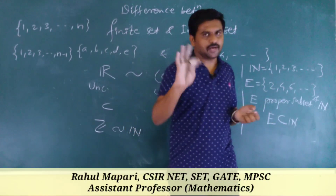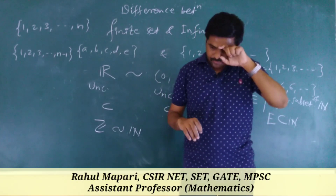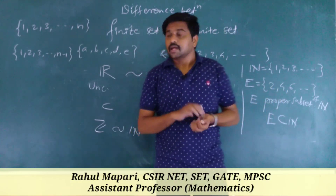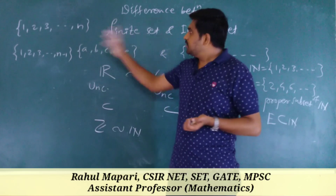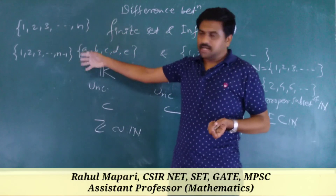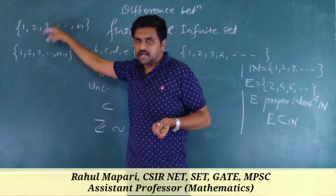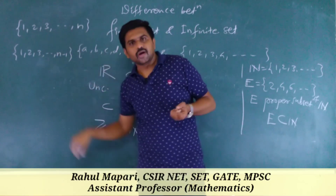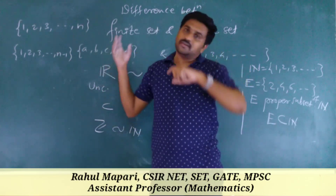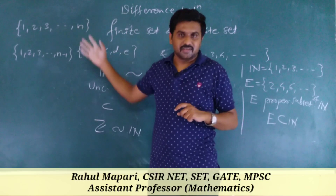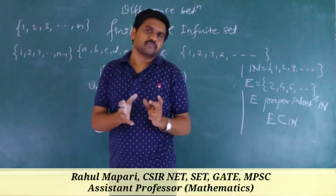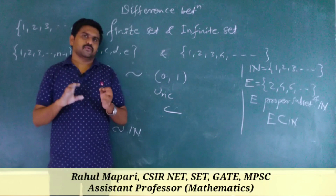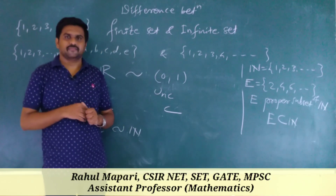So the conceptual difference between finite and infinite sets is: in an infinite set there is always at least one proper subset which is similar to that set. In a finite set, if you remove at least one element to make a proper subset, it is no longer similar to the original. This is the conceptual difference between finite and infinite sets. Thank you for watching.